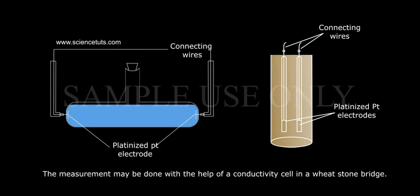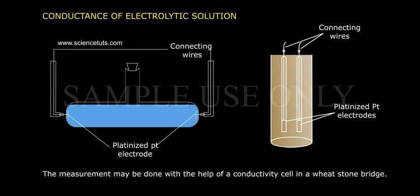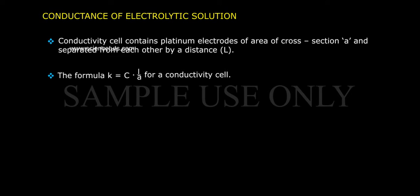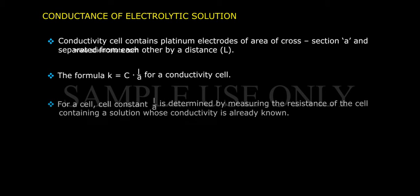The measurement may be done with the help of a conductivity cell in a Wheatstone bridge. The conductivity cell contains platinum electrodes of area of cross-section A, separated from each other by distance L. The formula is K equals C into L by A for a conductivity cell. The cell constant L by A is determined by measuring the resistance of the cell containing a solution whose conductivity is already known.